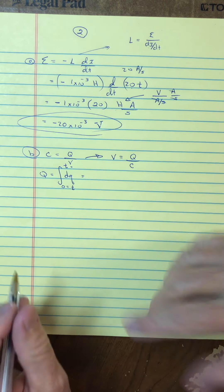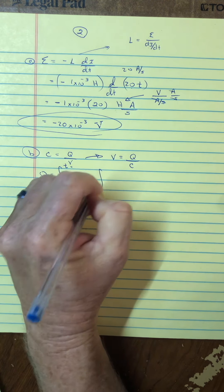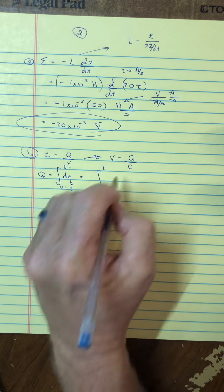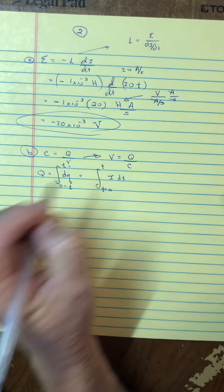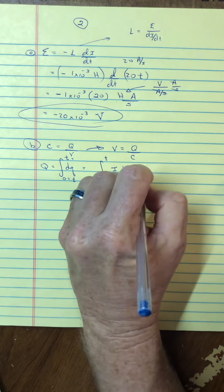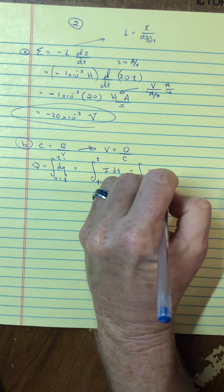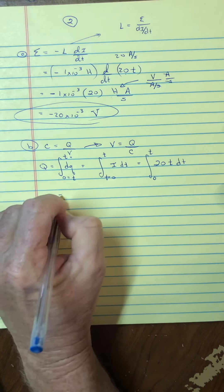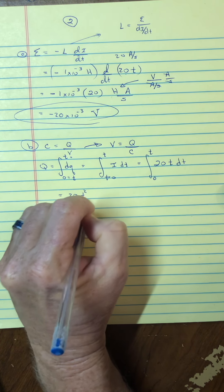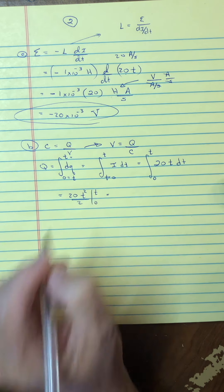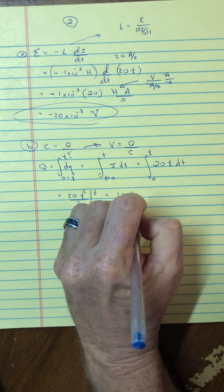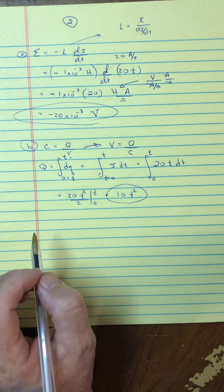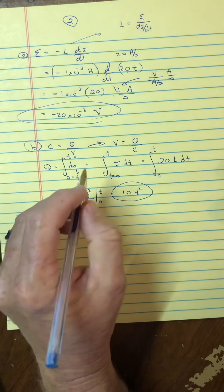So, from t equaling zero to t of dq, and dq is i dt. And, of course, the i, as we already said, is 20t dt going from zero to t. So, this would be 20, and then you would have t squared over 2, evaluated from zero to t, and then that makes 10t squared. So, this would be the mathematical formula for the charge on the capacitor.